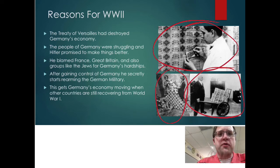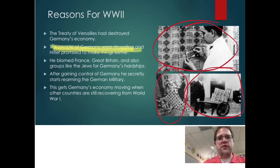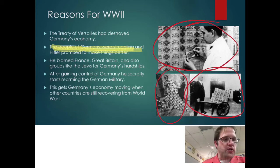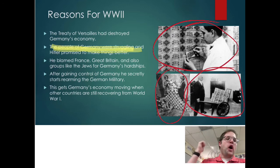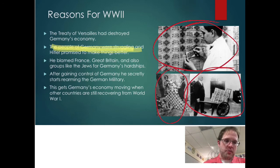So the Treaty of Versailles destroyed Germany's economy, the people were struggling, and Hitler promised to make things better. You'd want to highlight that — that's why Hitler was able to take power. When Hitler starts gaining popularity, he has to explain what he's going to do. He basically starts blaming the Allies — Britain, France, Russia, the United States — saying the Treaty of Versailles is the problem. That's why the German people supported him when he started trying to expand throughout Europe and take over countries.